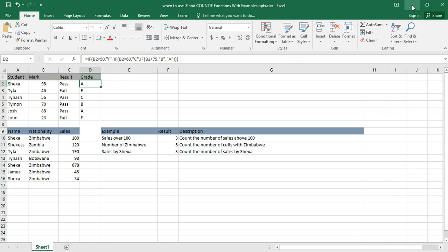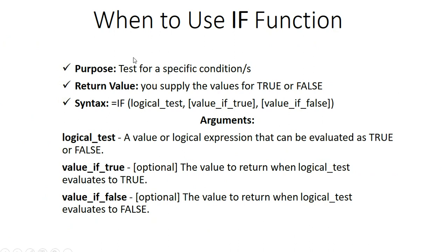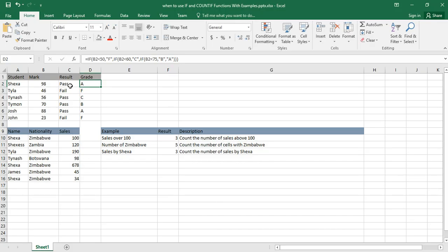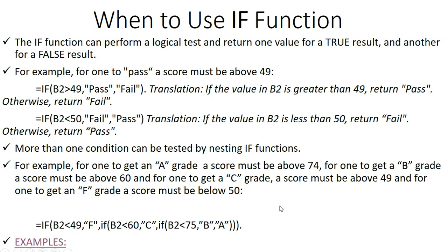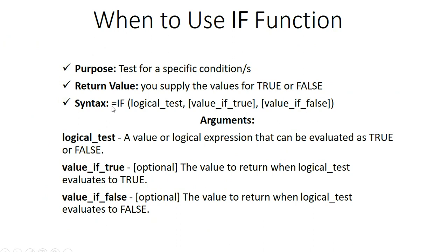The purpose of an IF function is to test for a specific condition or specific conditions — we may have one condition or more than one. You supply the values for true or false. In this example, the value if true is 'fail' if the condition is true, and the value if false is 'pass' if the condition is false. The syntax starts with an equal sign, then IF, followed by the logical test, the value if true, and the value if false.